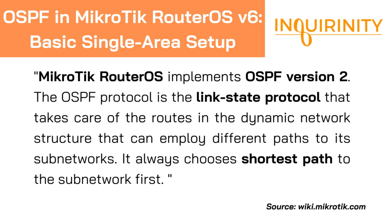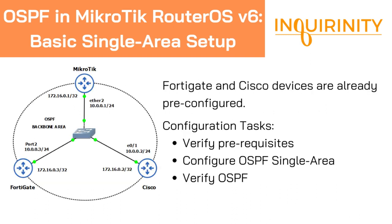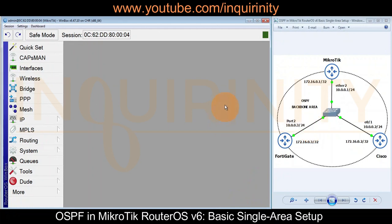For official documentation and more information regarding MikroTik's implementation of OSPF, you can check their wiki site. For our demonstration of a basic single area OSPF setup, we have three routers in the backbone area (Area 0): a MikroTik, a Cisco, and a FortiGate. Since we are focused on MikroTik in this tutorial, the Cisco and FortiGate devices are pre-configured to operate OSPF at a basic level.